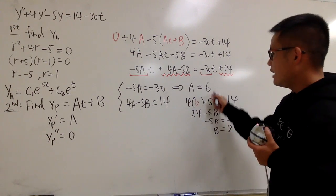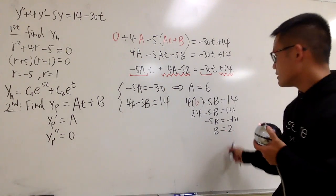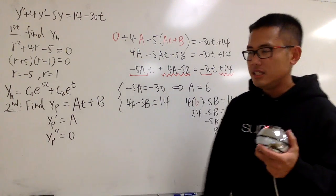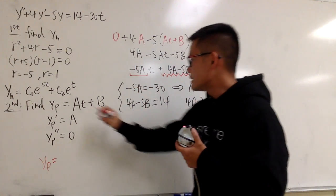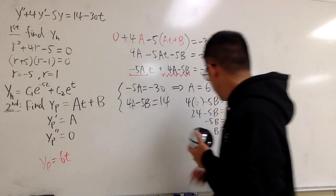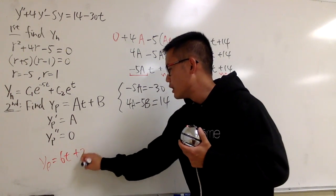Okay, A is 6, put it here, B is 2, put it here, that's the yp, so you can write it down if you like. Yp is equal to 6t, and the B is 2, so you put down plus 2, like that.